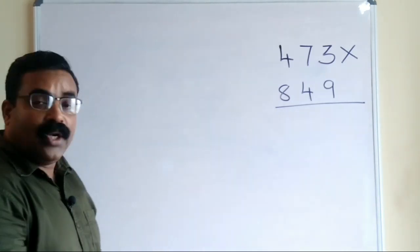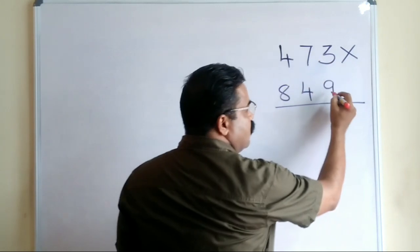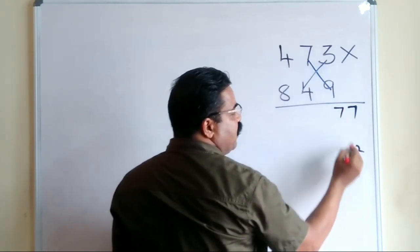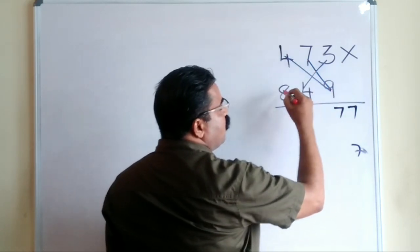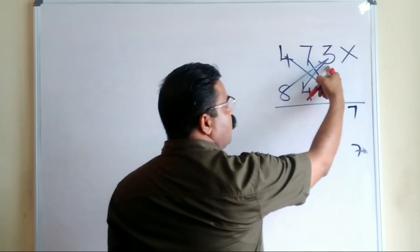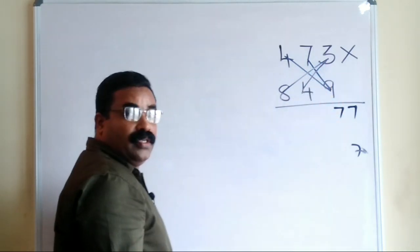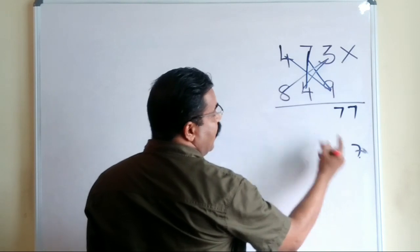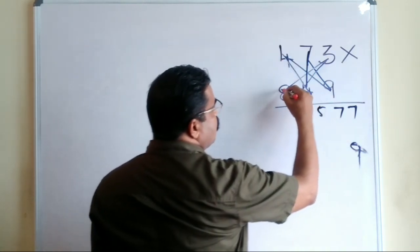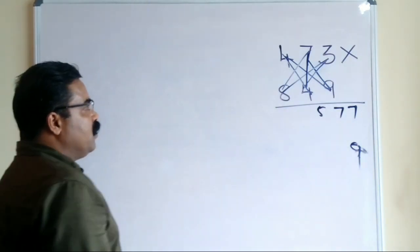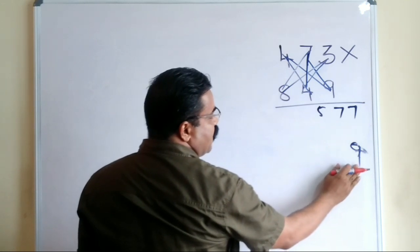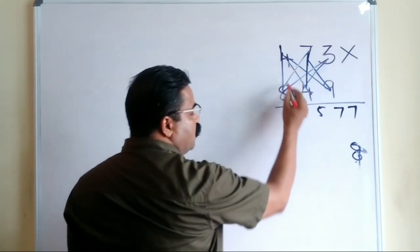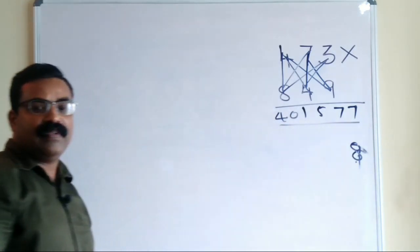Now let us complete our original question — 473 multiplied by 847 — within 10 to 12 seconds. Step 1: 3×7=27, carry 2. Step 2: 63+12=75, plus 2=77, carry 7. Step 3: 36+24=60, plus 28=88, plus 7=95, carry 9. Step 4: 16+56=72, plus 9=81, carry 8. Step 5: 4×8=32, plus 8=40. Answer: 400,631. You get the answer in a single line.